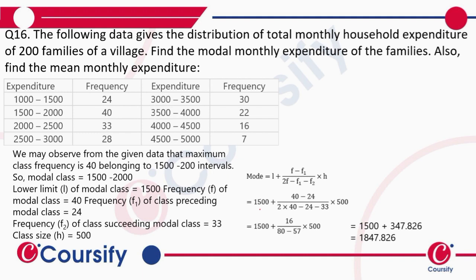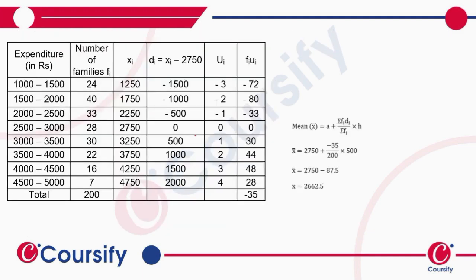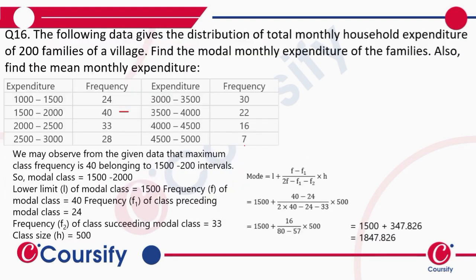For the mode, we need the modal class. The maximum frequency is 40, which belongs to the class 1500 to 2000. So f will be 40. The cumulative frequency table is shown here, but we don't need cumulative frequency — it is mode.